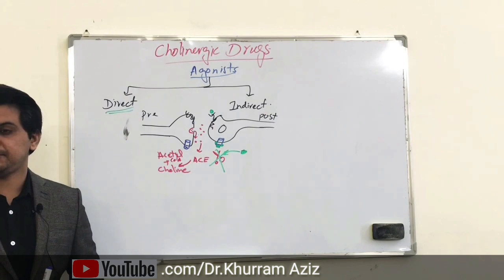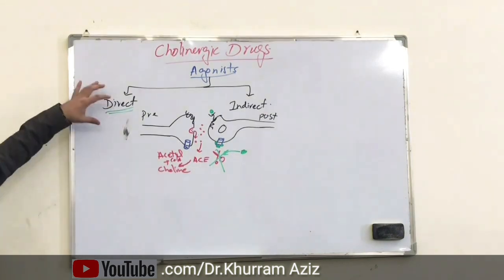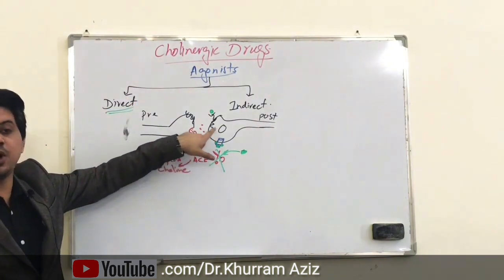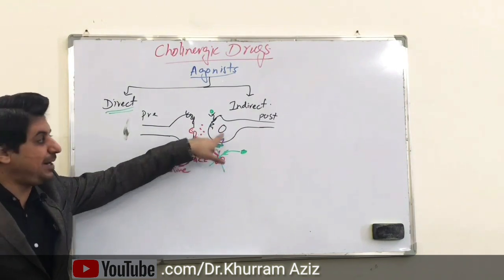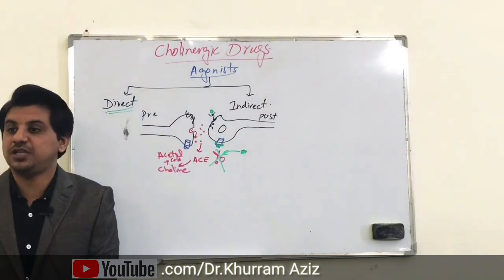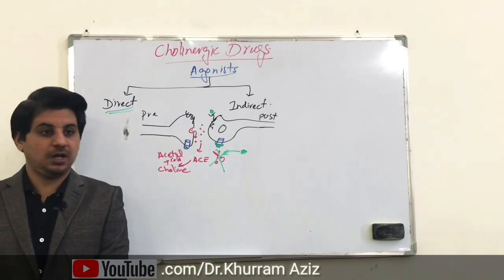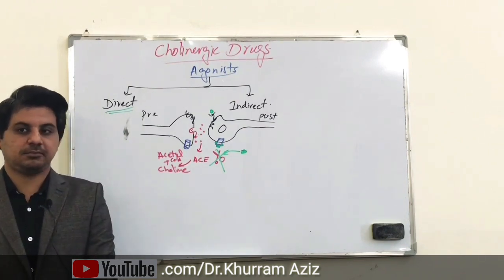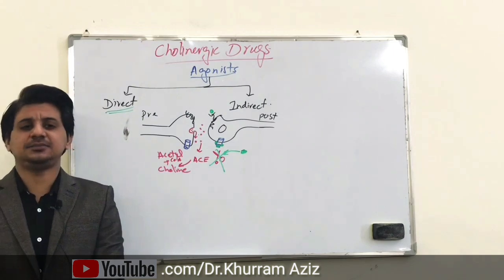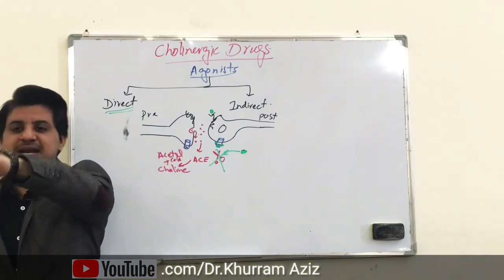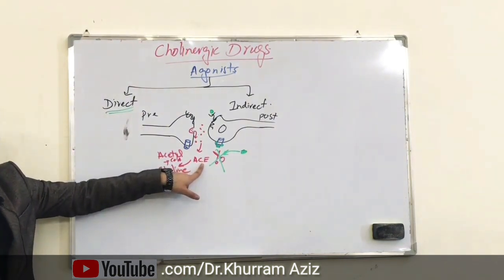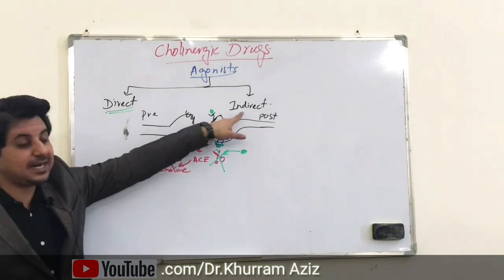Direct-acting drugs directly attach to the receptors on the postsynaptic membrane or on the neuroeffector sites. They directly mimic the effects of acetylcholine. Whenever acetylcholine binds to the receptor and becomes detached, it is degraded by acetylcholinesterase.